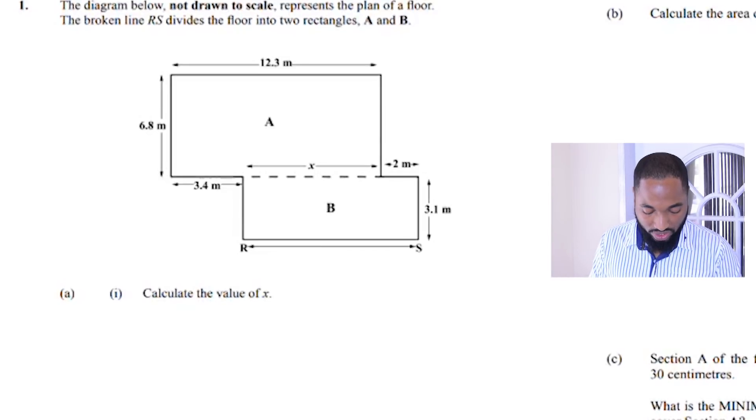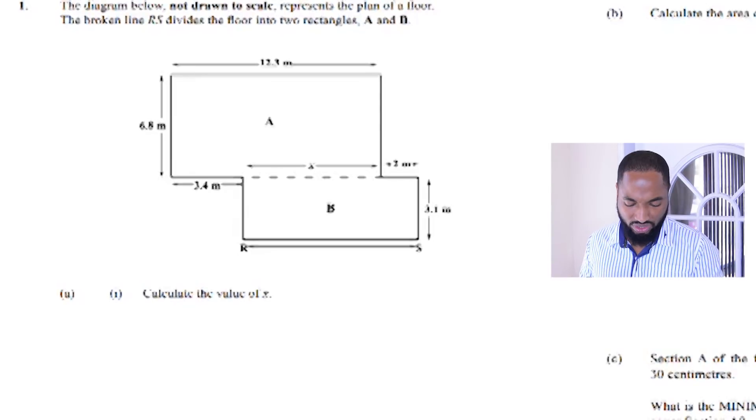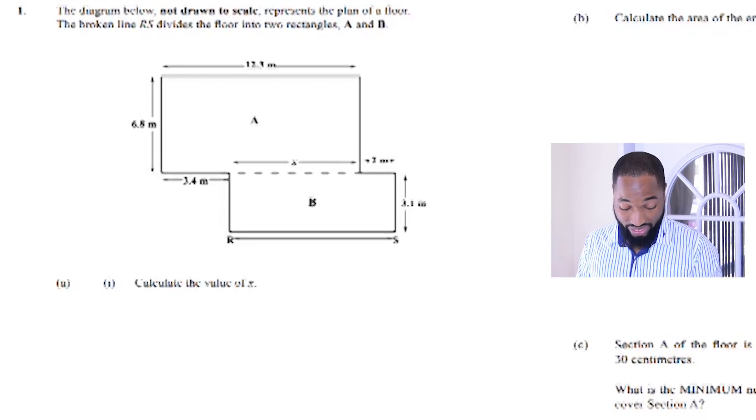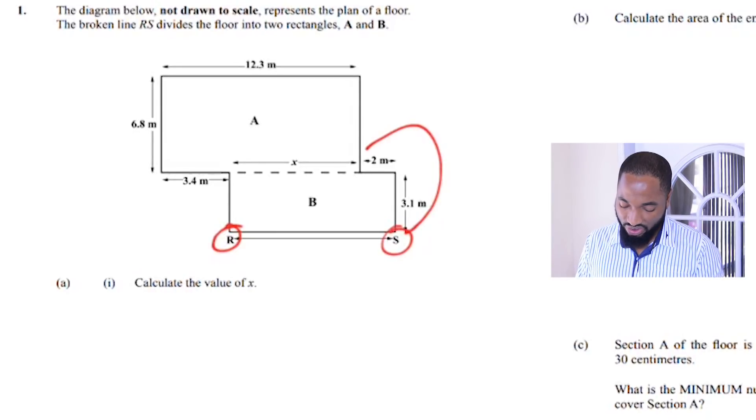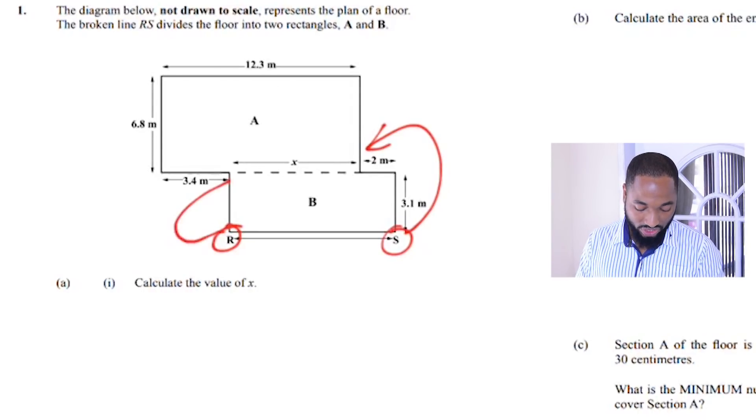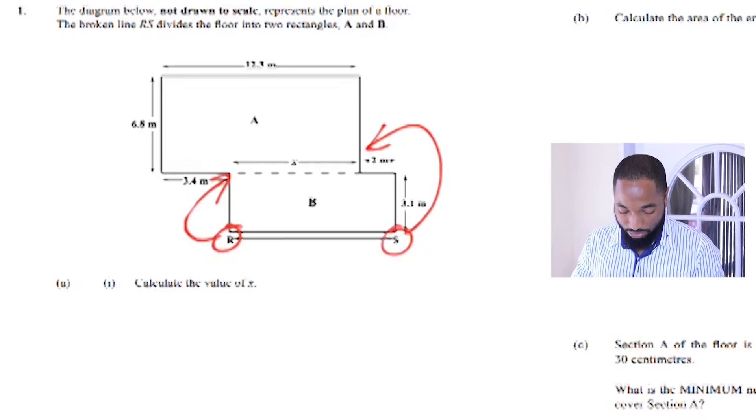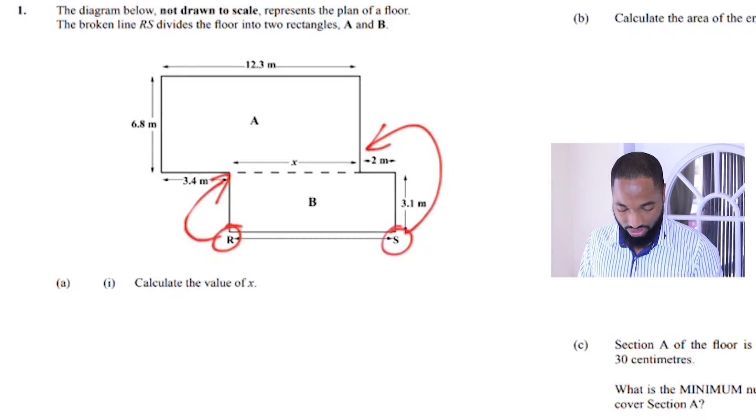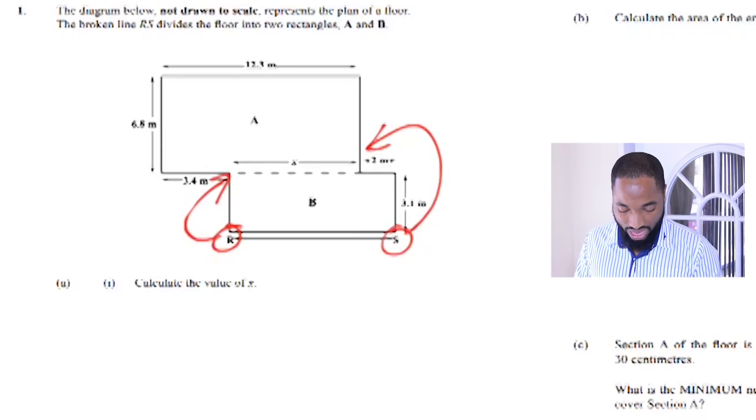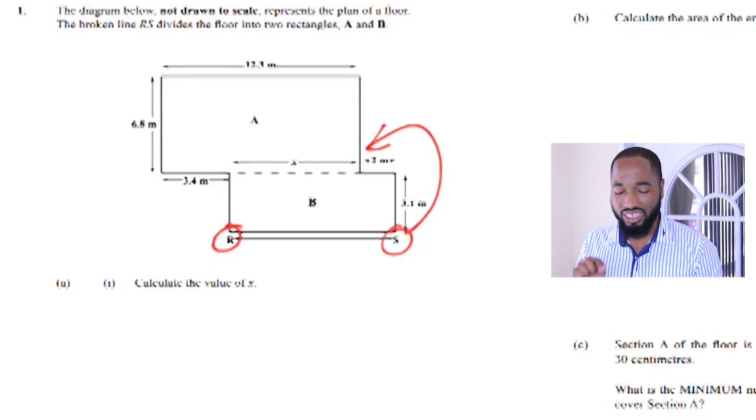Let's read the question: the diagram below, not drawn to scale, represents the plan of a floor. The broken line RS divides the floor into two rectangles. If you look at this, you'd realize the question is kind of phrased badly. RS should have been here if they want to say that RS divides the floor into two rectangles. They're probably speaking about this broken line here. We can still do the question, but that's just a poor phrasing there or maybe an error.